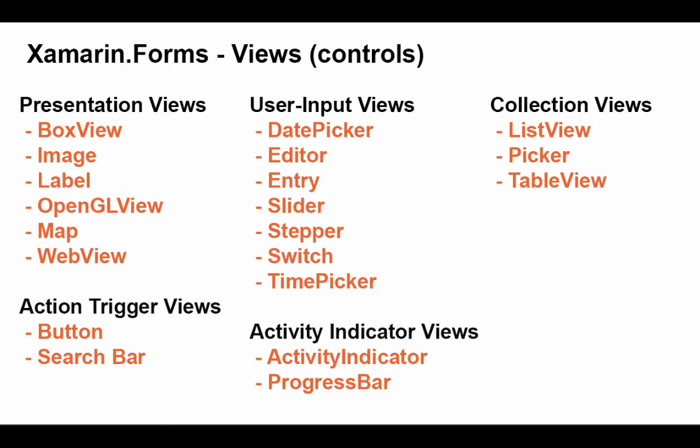Within those layouts, we can include all kinds of controls or views. We have views for presenting information, such as a label or an image, or maybe a web view if you want to display HTML code. A box view is really just a placeholder — it's a graphic box and we specify a color for it. Normally we use that in a layout where we're waiting on a graphic designer to provide an image.